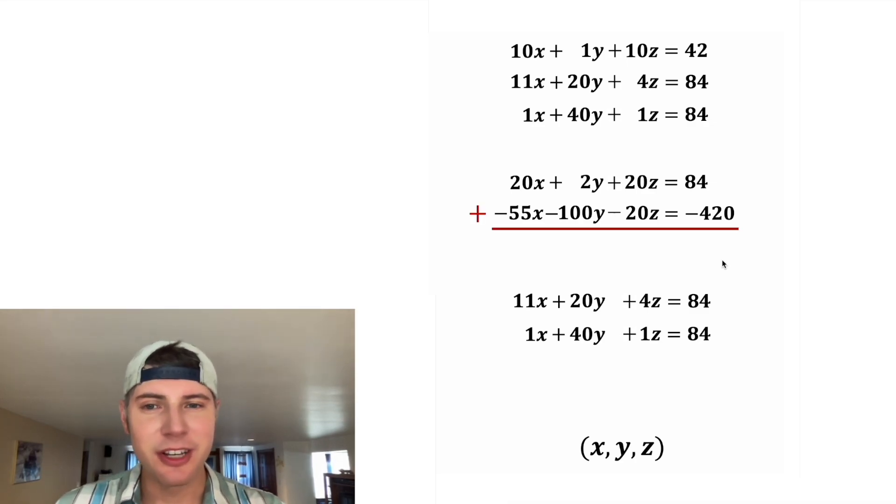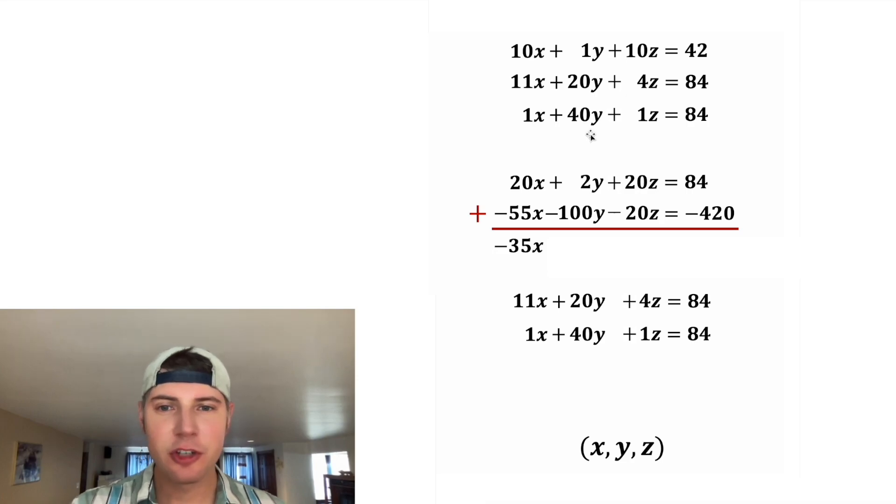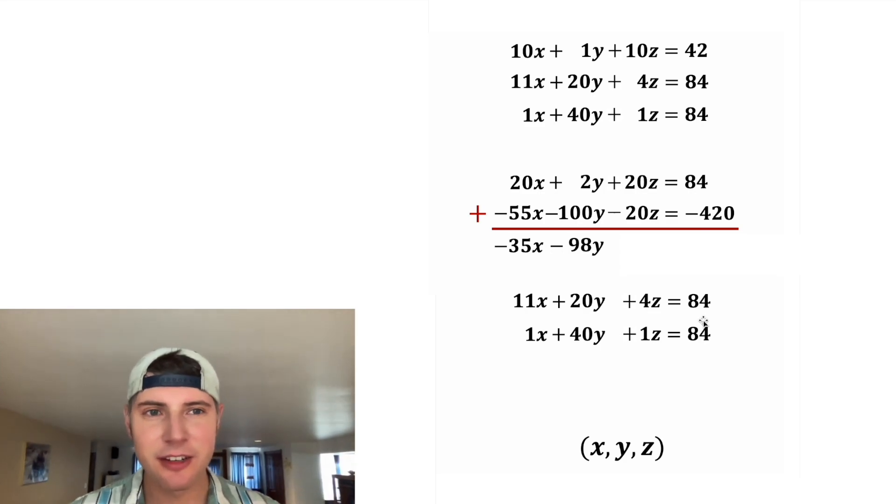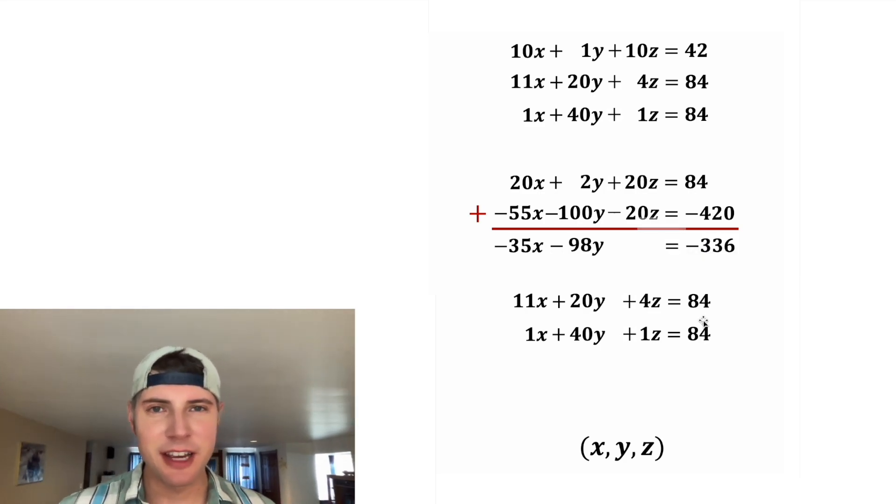Now we can add these two rows together. 20x minus 55x is negative 35x. 2y minus 100y is negative 98y. 20z minus 20z is nothing. And 84 minus 420 is negative 336. We were able to get rid of the z.